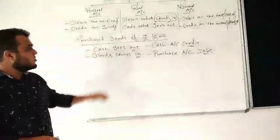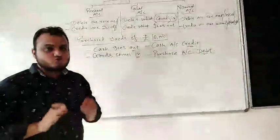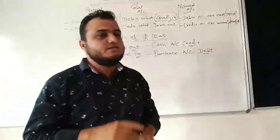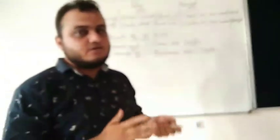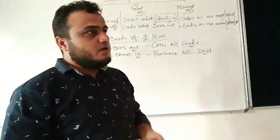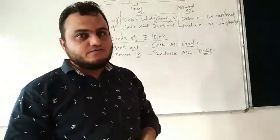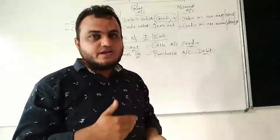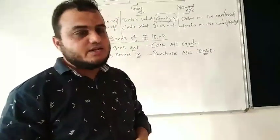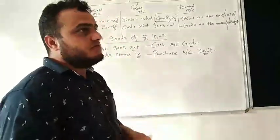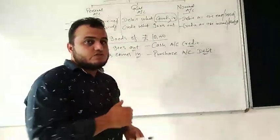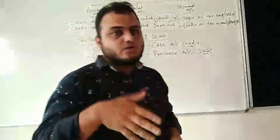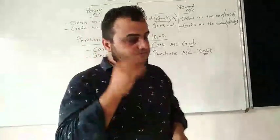Normally we write journal entries in tabular form with columns and drawn lines. Since this is just the beginning, we are writing casually. Once we learn everything properly, we will write in the table format as well.